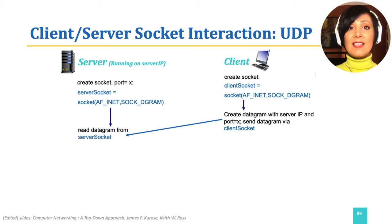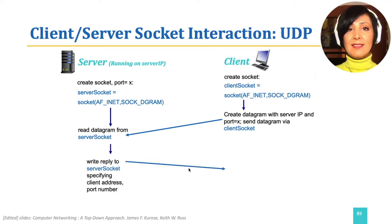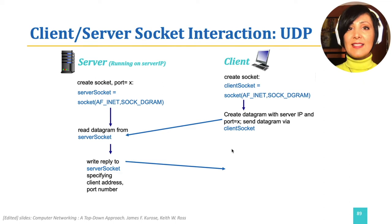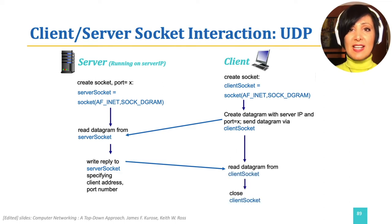The server program then prepares and sends the reply packet to the client. In this process, it attaches the client process address to the datagram. This address was specified in the packet received from the client. The client receives the reply packet, reads it, moves to the action parts with the communication data, and closes the client socket.